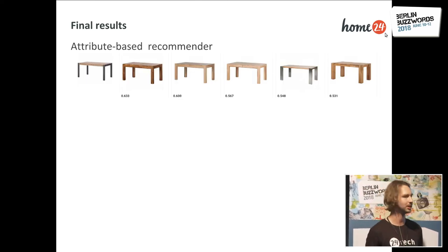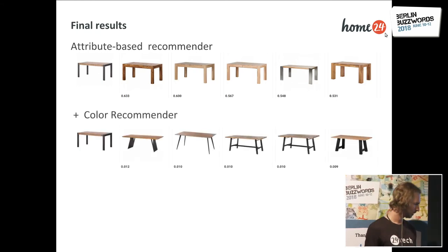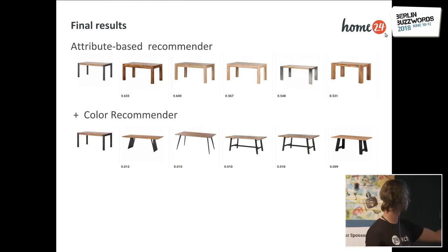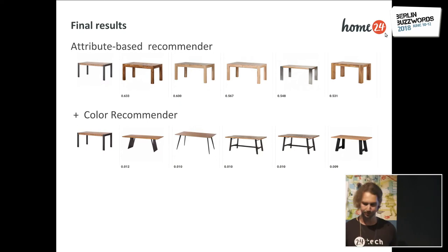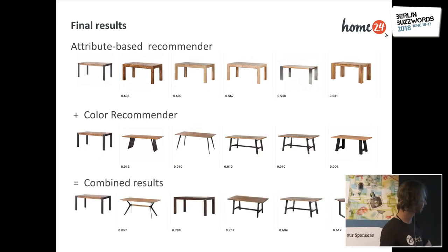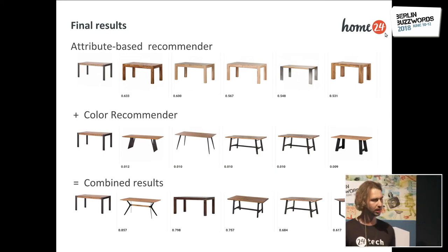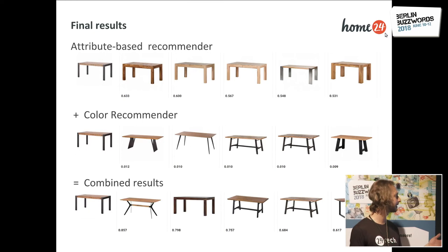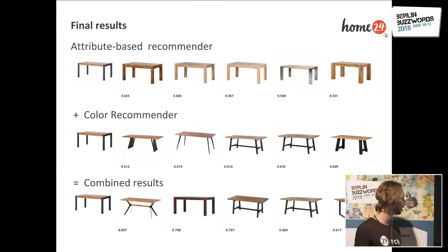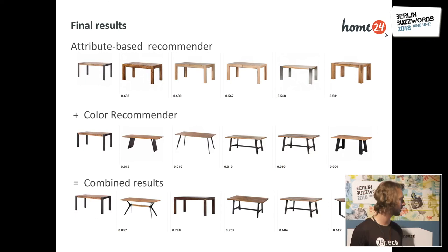What does this actually give us as results? We have the top picks of the attribute-based recommender, we combine this with the top five picks of the color recommender, and eventually the combined results look like this. For this particular example you might say the color recommender by itself looks better than the combined results, but we tested this and combining the two gives us the best results overall.